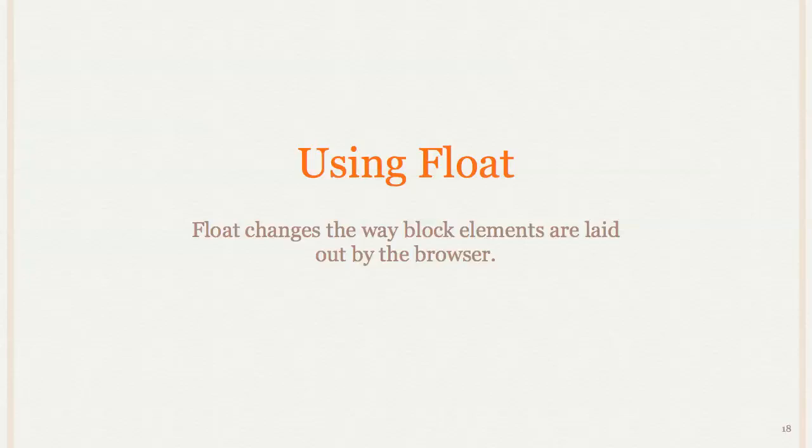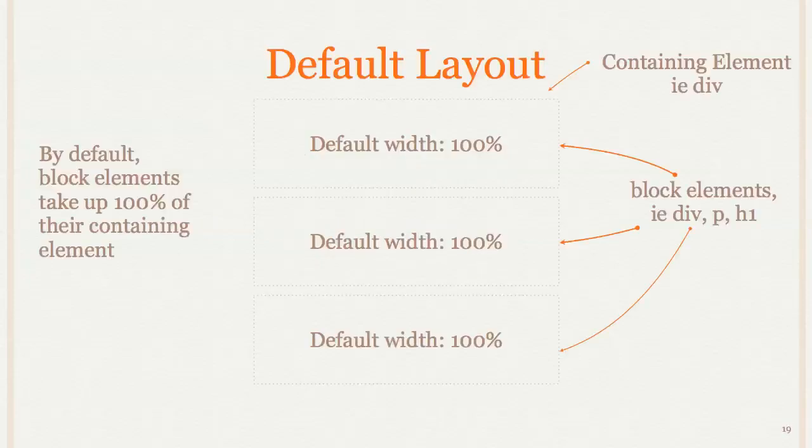So what float does is it changes the way a block element is laid out by the browser. So normally, the block elements just take up 100% of the width that's available to them, if you don't write anything as we did before with the box model.